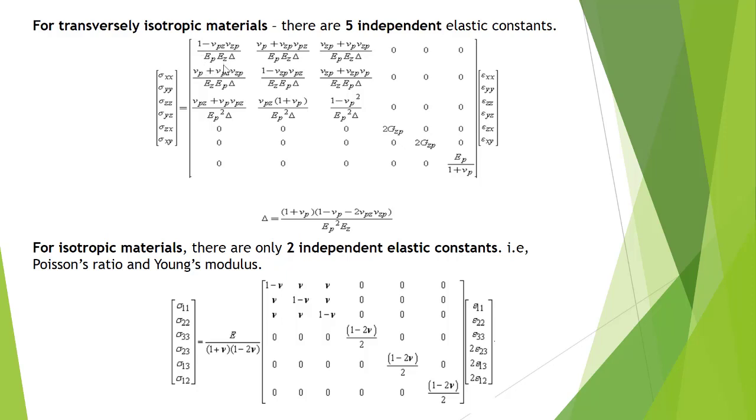Which are the 5 independent elastic constants? One is Gzp, Ep, Ez, and nu pz. They are the 5 independent elastic constants.